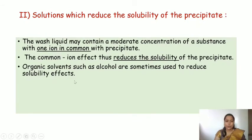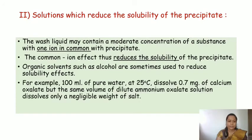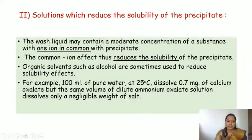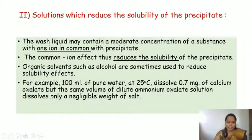Organic solvents such as alcohol are sometimes used to reduce the solubility of inorganic salts. For example, 100 ml of pure water at 25°C dissolves 1.7 mg of calcium oxalate, but if we replace pure water with dilute ammonium oxalate solution, it dissolves only a negligible weight. This is because the oxalate ion is common to both ammonium oxalate and calcium oxalate, and due to the common ion effect the solubility of calcium oxalate is reduced.